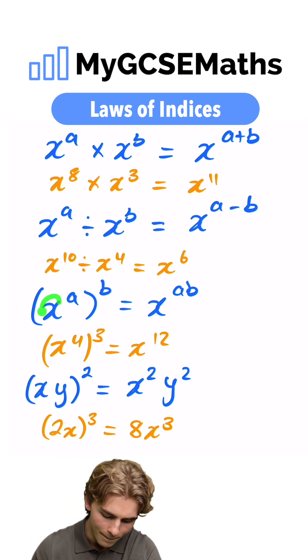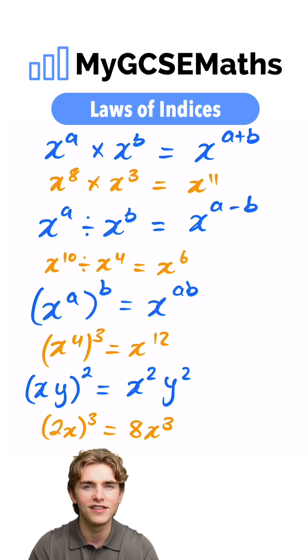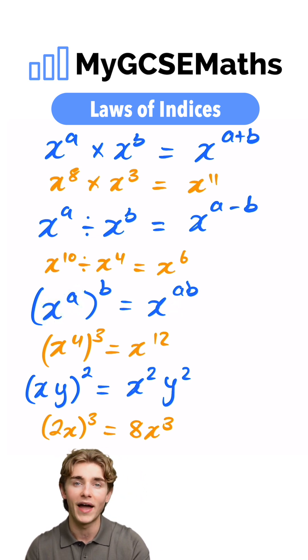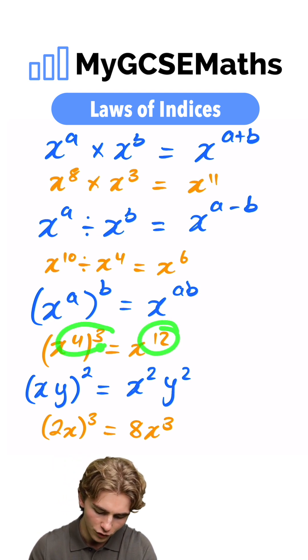Next up, if we have a base to a power and we raise that to another power, we're going to multiply the powers. For example, x to the 4 to the power of 3 is going to be x to the 12, because 4 times 3 is 12.